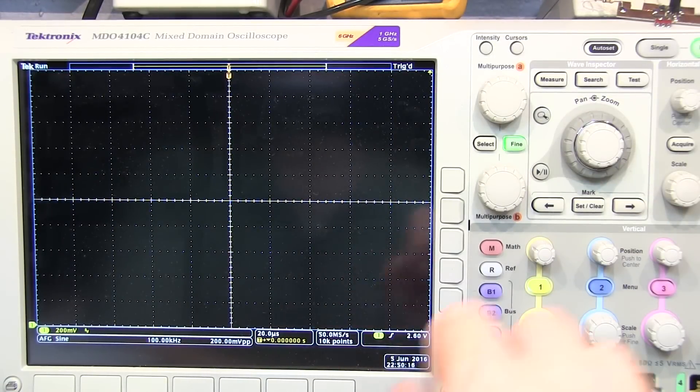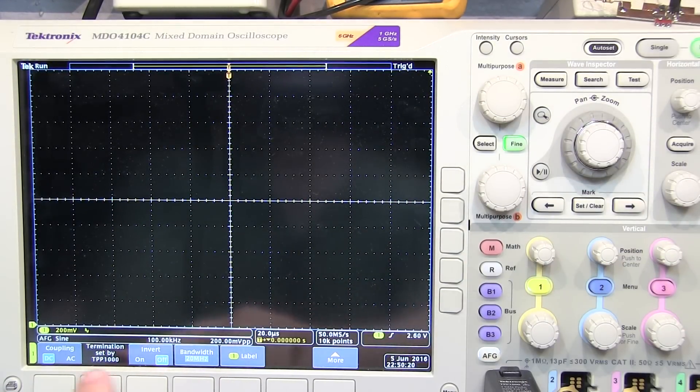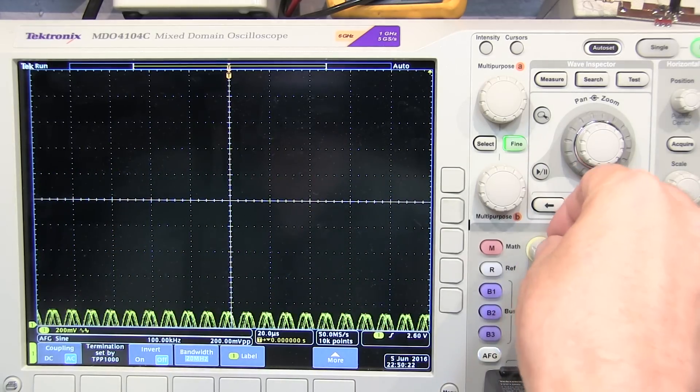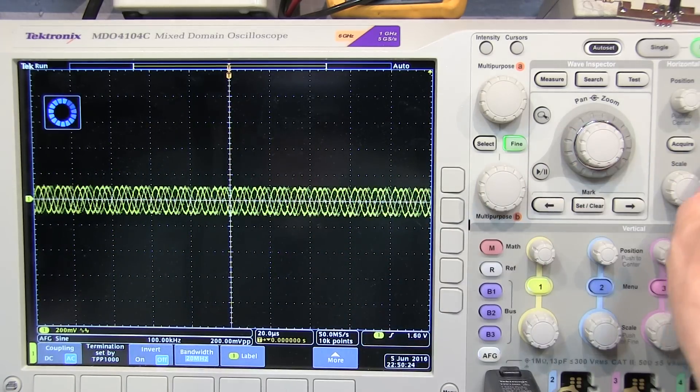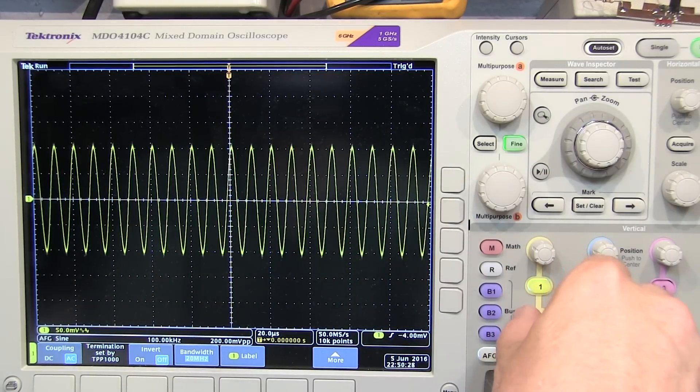Now I know what you're thinking. You might say, well why don't you just use AC coupling? If I go to my vertical channel, and change the coupling to AC, and move my position in the middle, now I can actually see my signal right here in the middle, and I can adjust the scale all I want.